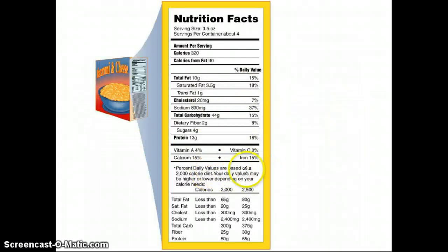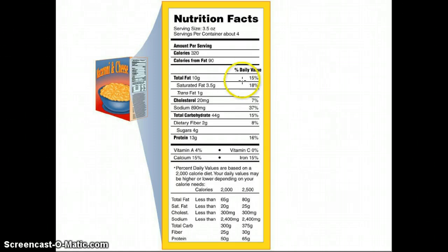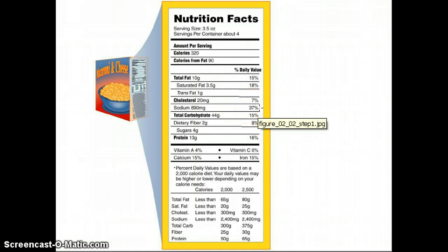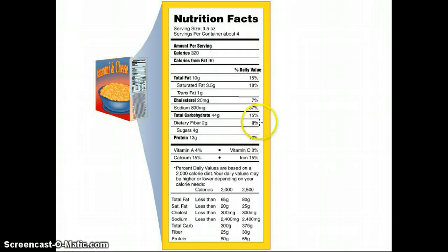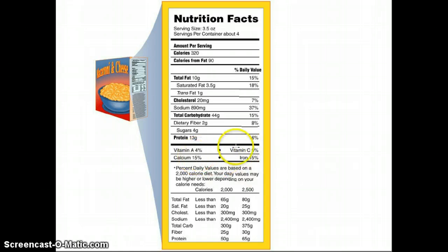Looking at this product, you can see that the macaroni and cheese is a good source of fat and a good source of saturated fat — which we may not want. It's also a good source of sodium, which we don't necessarily want, so just because it's a good source of something doesn't always mean that's a good thing. It is a good source of carbohydrate, which provides glucose for the brain, and a good source of protein, iron, and calcium.